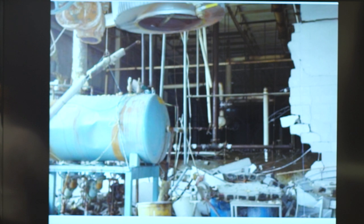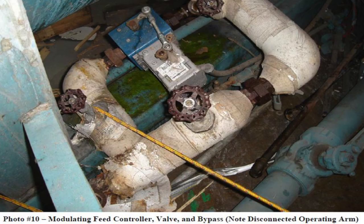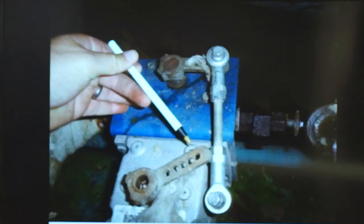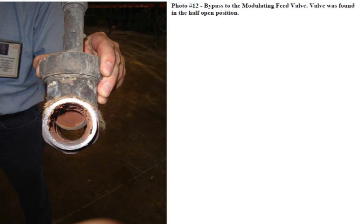The low water cutoff works like a float mechanism, like the one on the back of your toilet — McDonald Miller is one major manufacturer. The boiler was flooding, getting too much water. So the operators decided to fix the problem by going to the feed water valve with the Honeywell motor on it and disconnecting the linkage from the valve, partially opening or closing it manually.